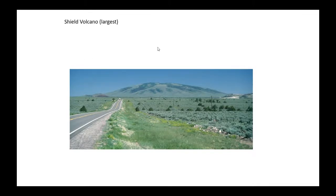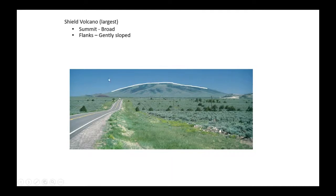The largest of the three main types are shield volcanoes. The shape of a shield volcano has quite a broad summit, pretty flat. The flanks are gently sloping for a mountain, usually on the average of 1 to 10 degrees. You can see that shape here. They were initially identified because they kind of looked like a warrior shield.